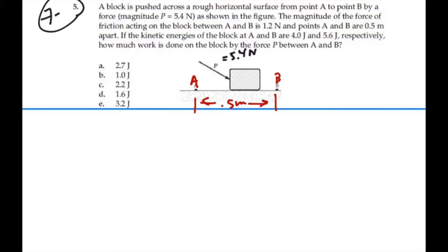We also know that there's going to be a frictional force working against the motion as it's going from A to B, some kind of frictional force like this. And that frictional force is given as 1.2 newtons.